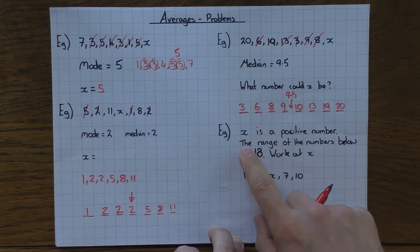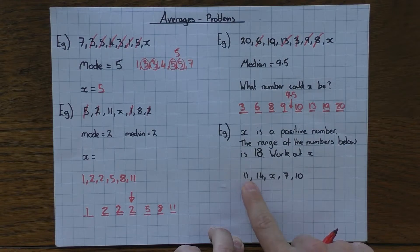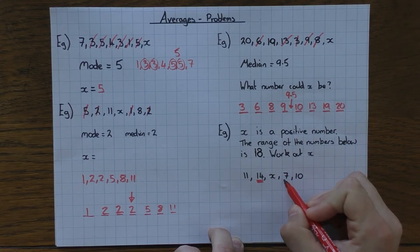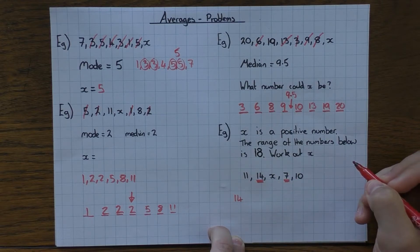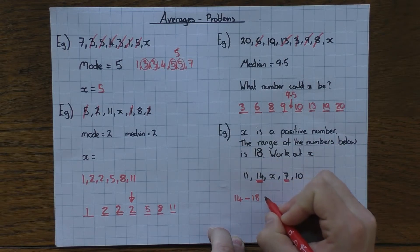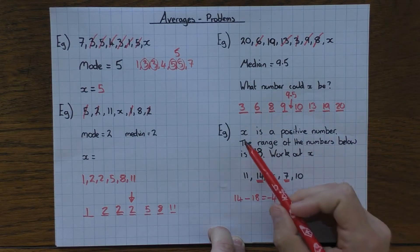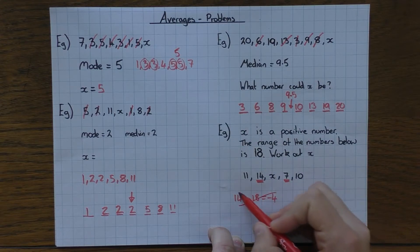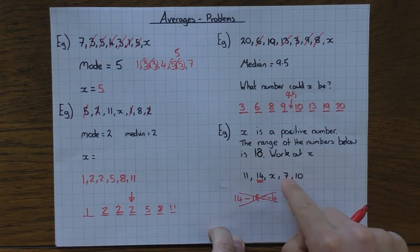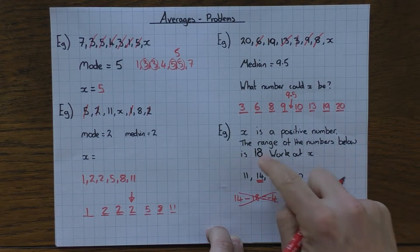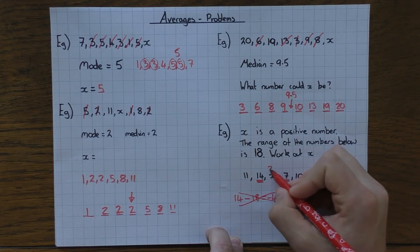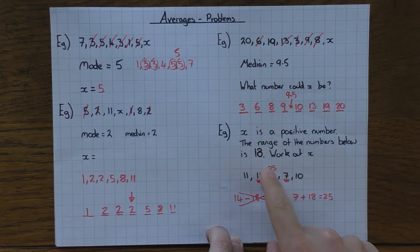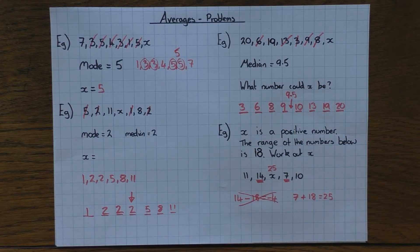x is a positive number and the range of the numbers is 18. The biggest number we already have is 14 and the smallest is 7. If we assume 14 is the biggest and subtract 18, we get −4 — but x must be positive, so that doesn't work. Instead, take 7 as the smallest and add 18: 7 + 18 = 25. Checking: 25 − 7 = 18, which is the range, and everything else falls in between. So x = 25.